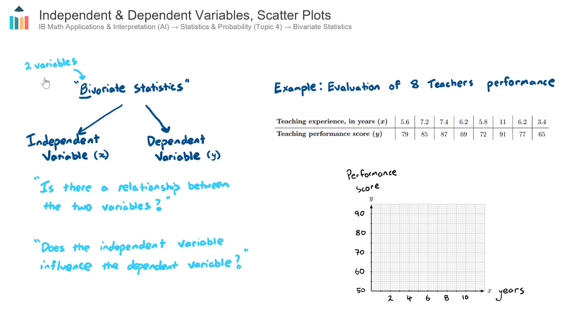We now encounter questions that have two variables. When we have two variable statistics, one of the variables is known as the independent variable, which we usually call x, and the other is called the dependent variable, which we call y. Other names for these include the independent variable is sometimes known as the input variable, and the dependent variable is sometimes known as the output variable.